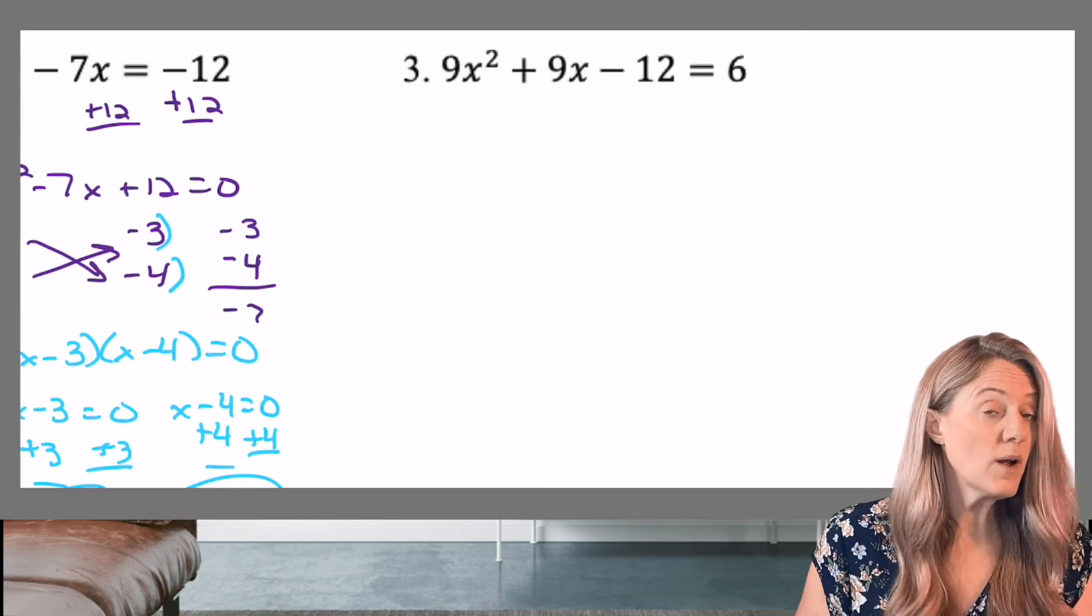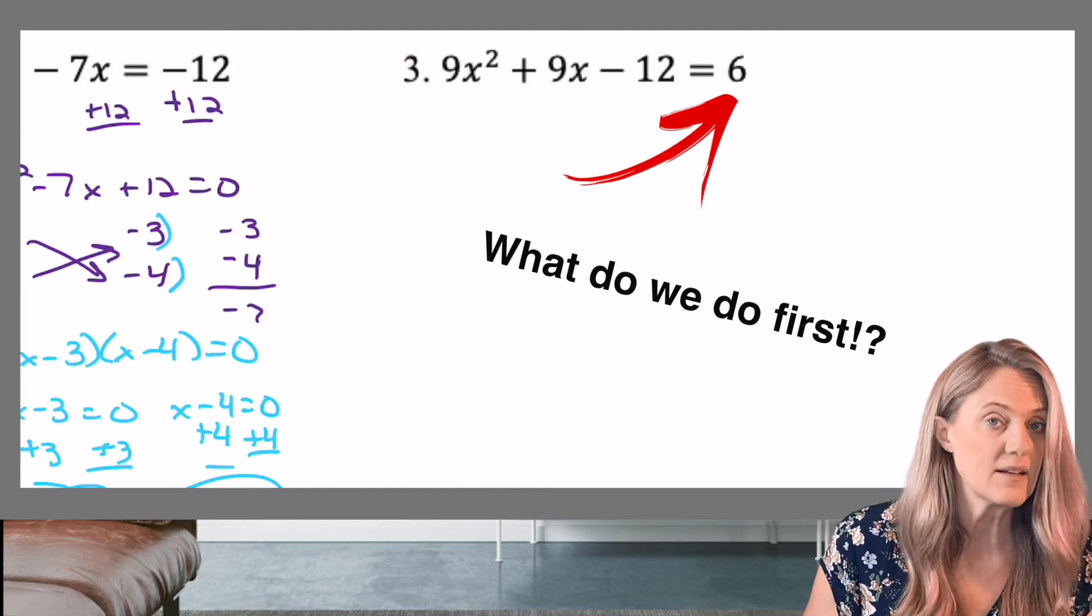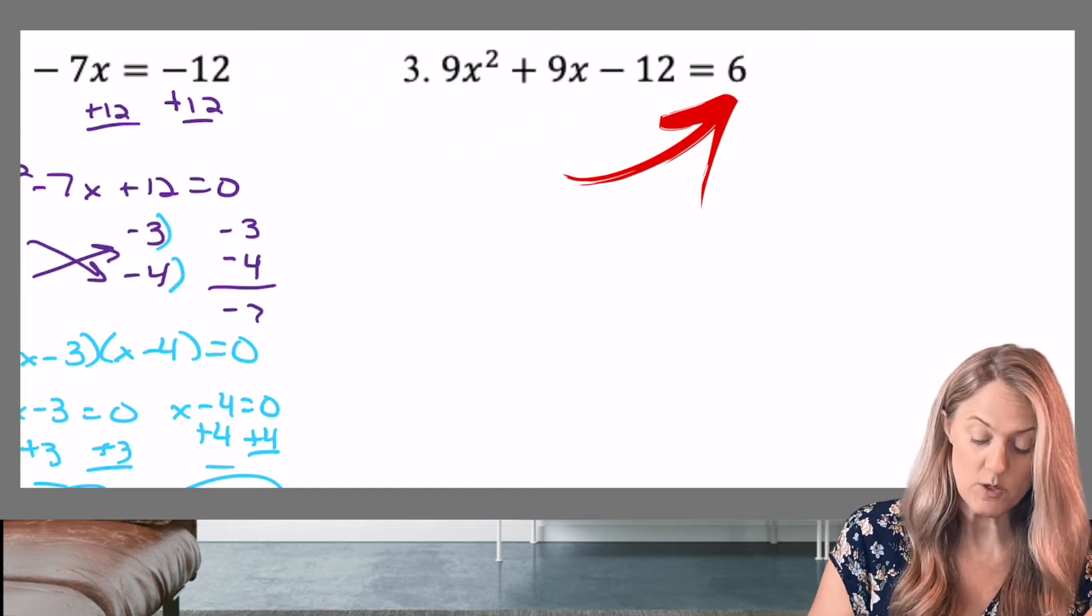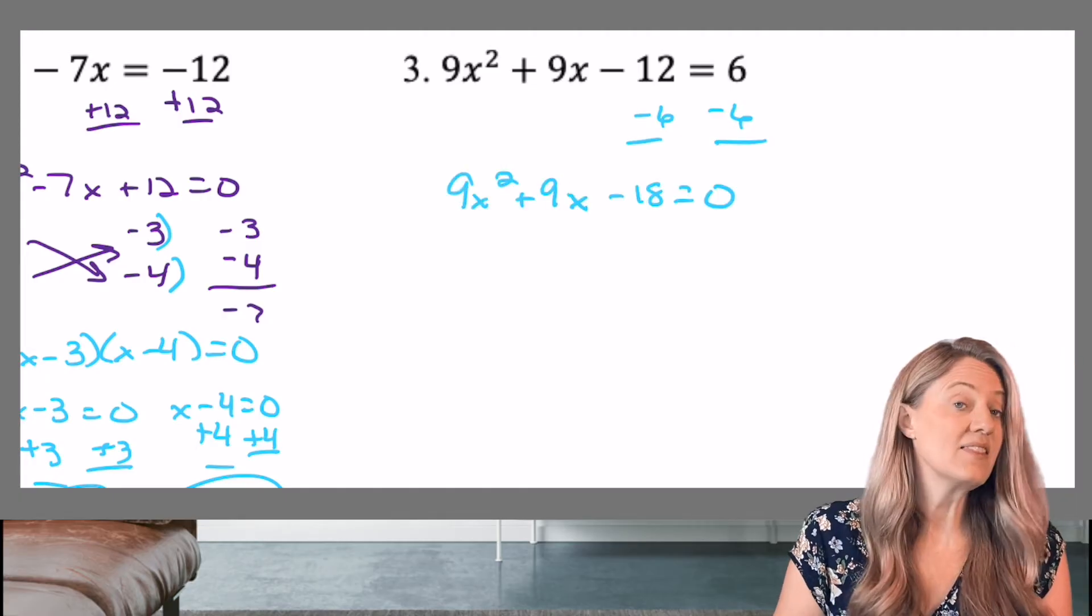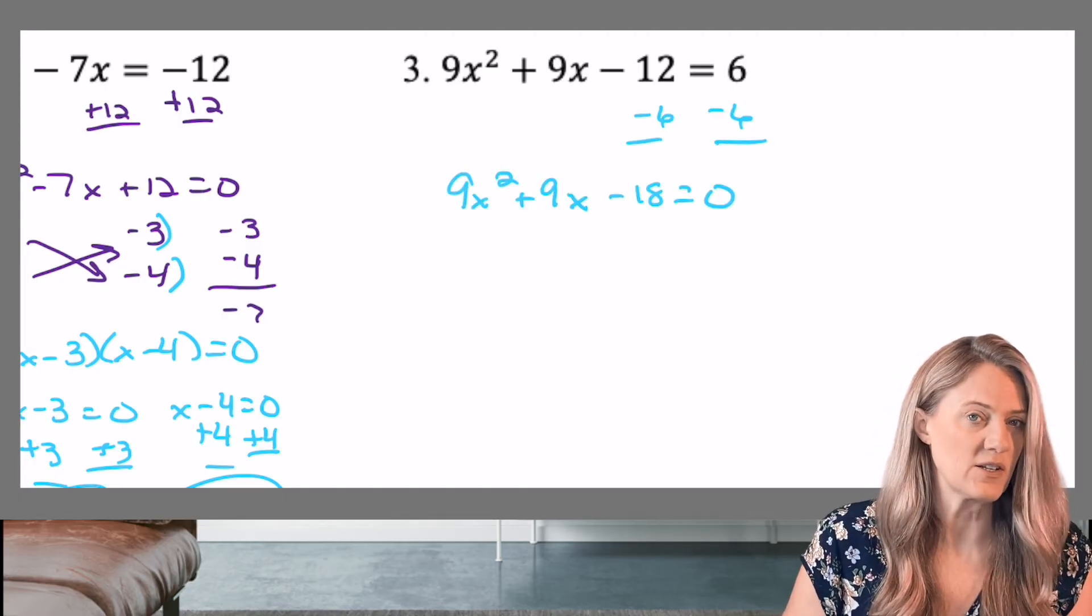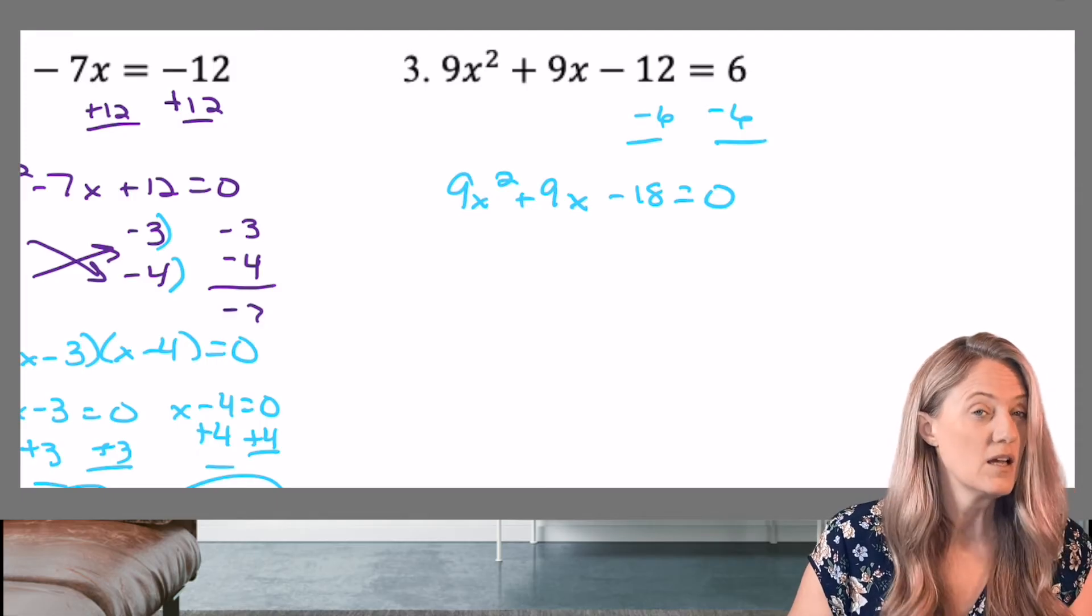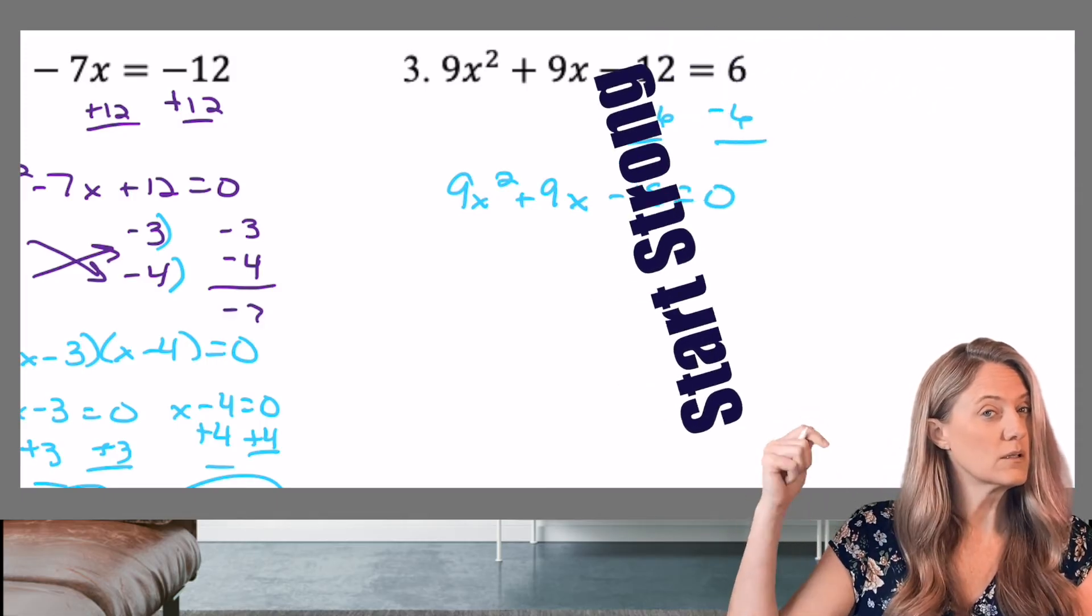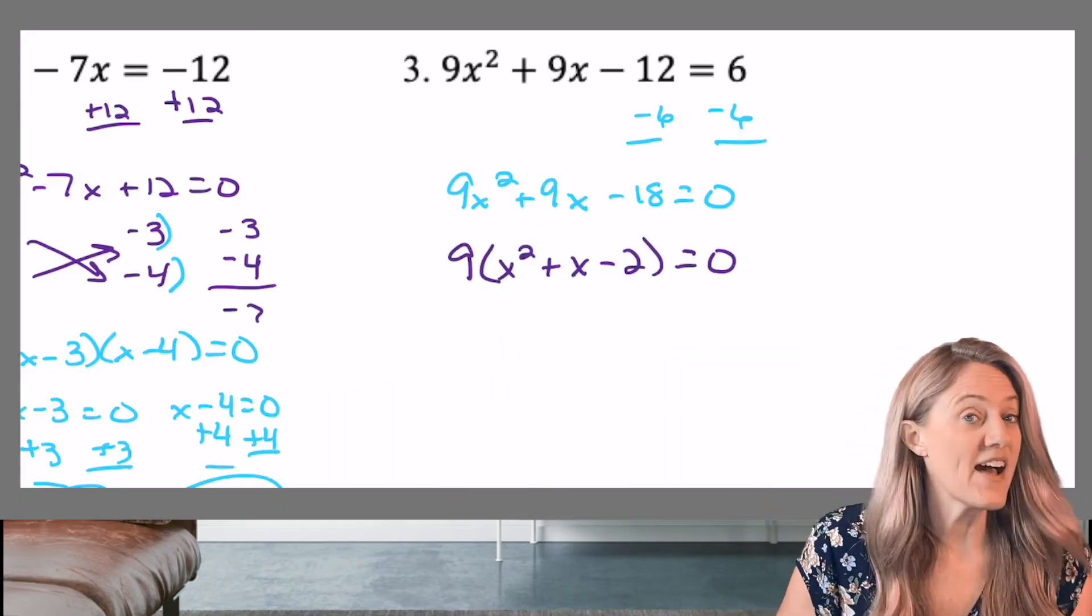Take a look at three. Once again, what do we need to do first and foremost? You're right. Make sure it's set equal to zero. So we're going to subtract the six, move it over to the minus 12. And then I can go ahead and crisscross factor. However, I could make this a lot easier. Did you remember to start strong?